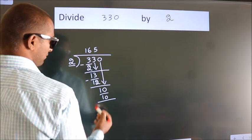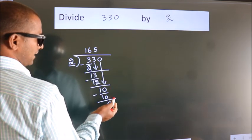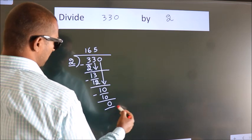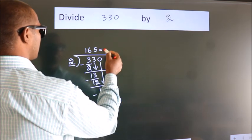Now, we subtract. We get 0. No more numbers to bring down. So, we stop here. This is our remainder. This is our quotient.